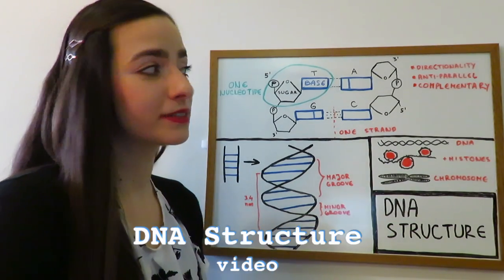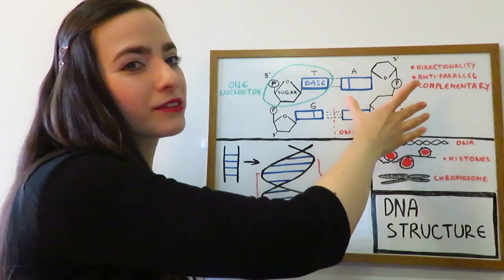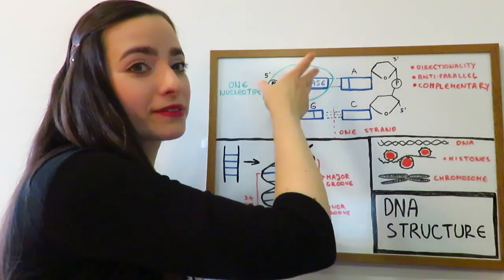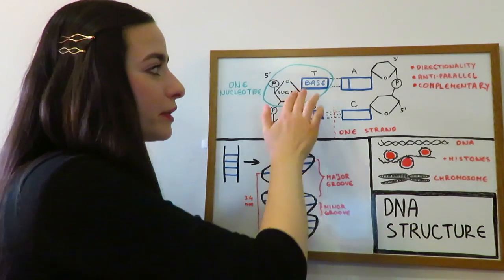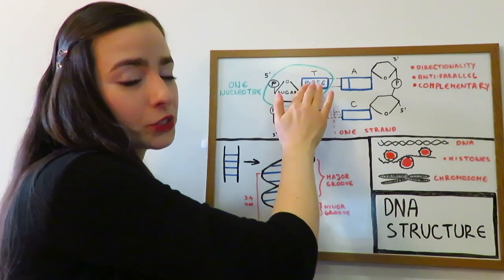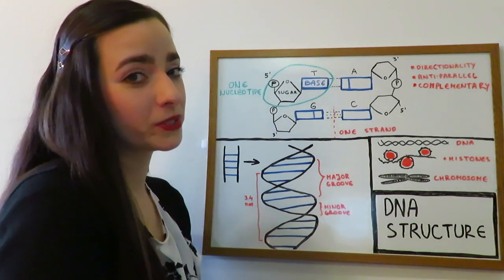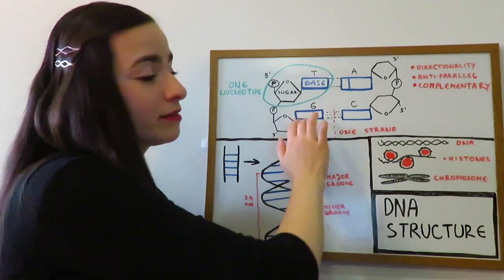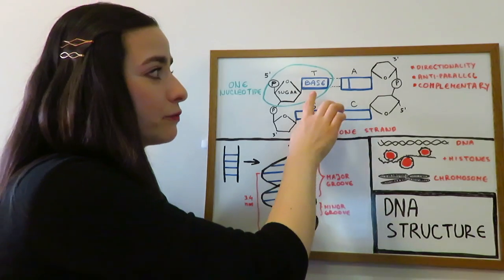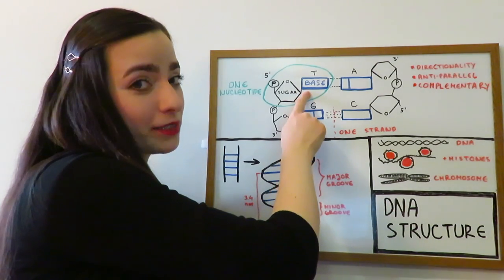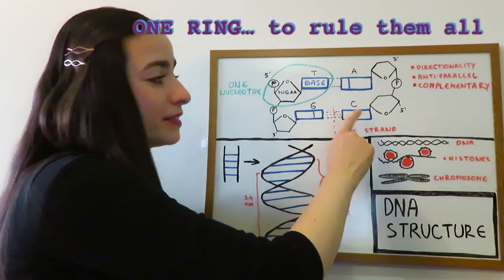Another important word to know here is complementary, which means that we can easily predict which bases are on one strand if we already know the ones on the opposite strand in the same location. For example, if here we have thymine as a nitrogenous base, we automatically know that adenine is on the opposite strand. If it's guanine, then on the opposite strand we have cytosine. It's always a pyrimidine base binding to a purine base — two rings binding with one ring.